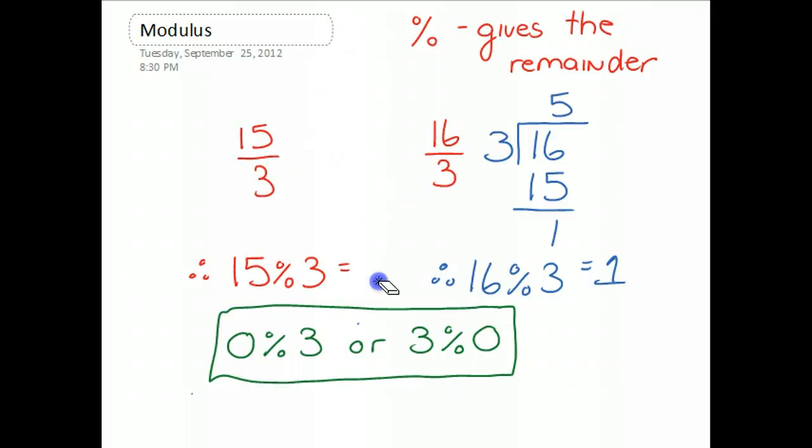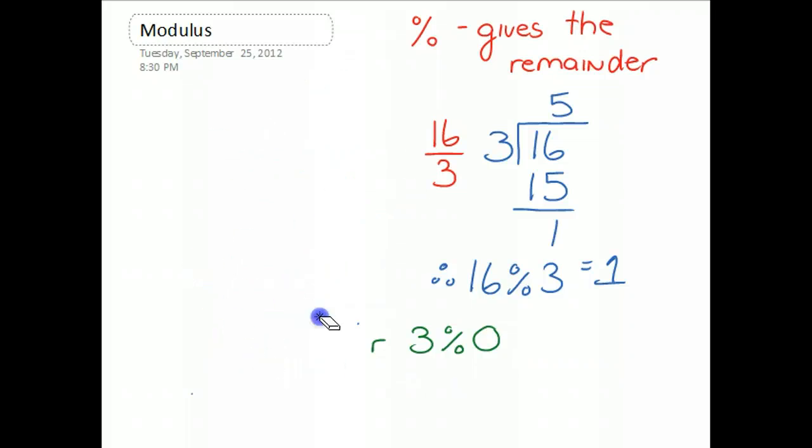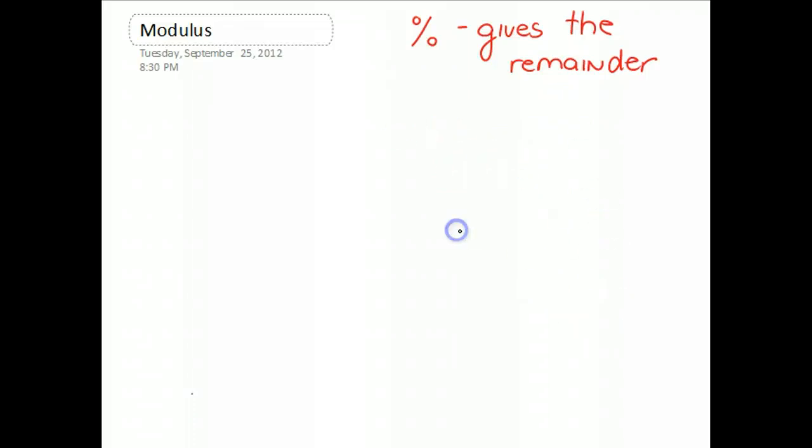So, let's erase some of our work here. So, 3 mod 5, to calculate that, we need to consider 3 divided by 5.